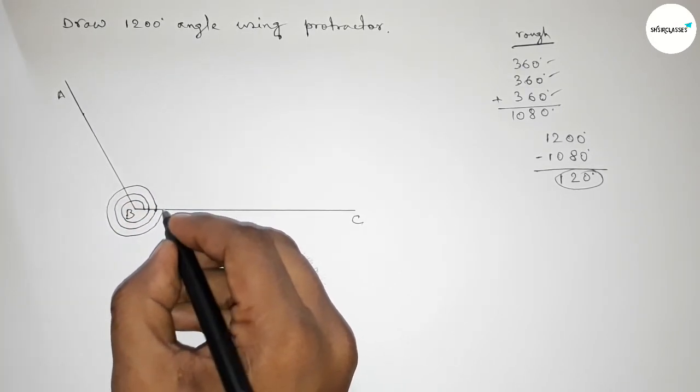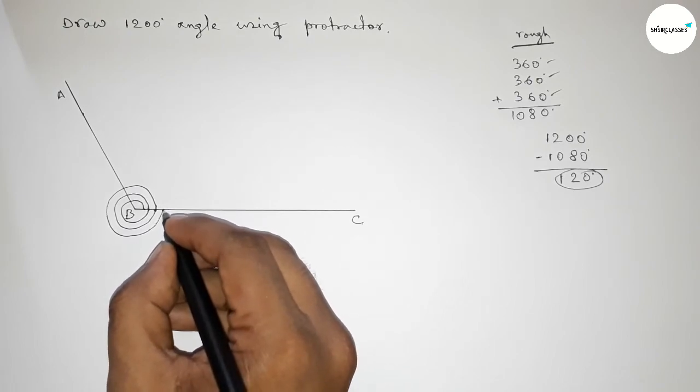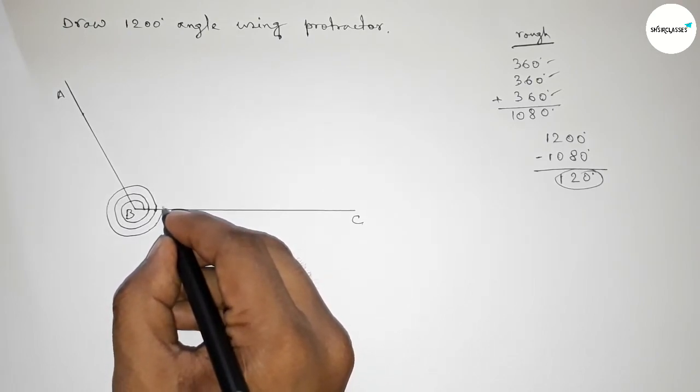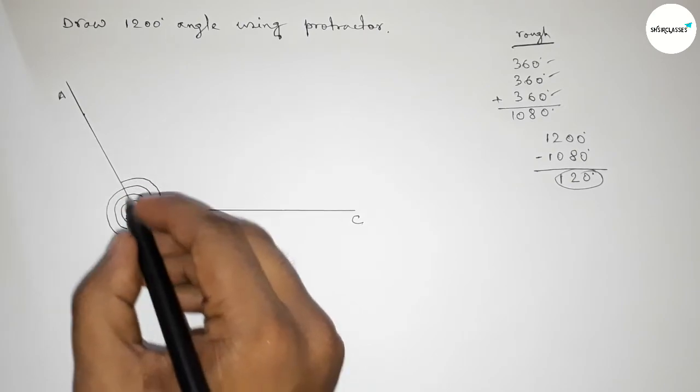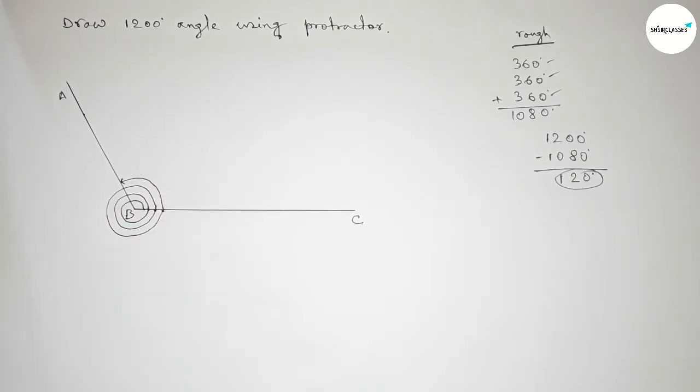1080 degrees. Now taking from this to this, this is plus 120 degrees, so this is a total of